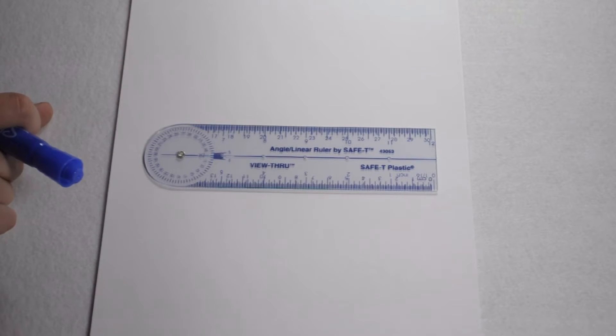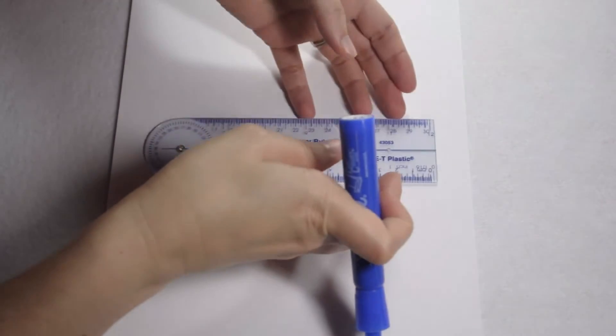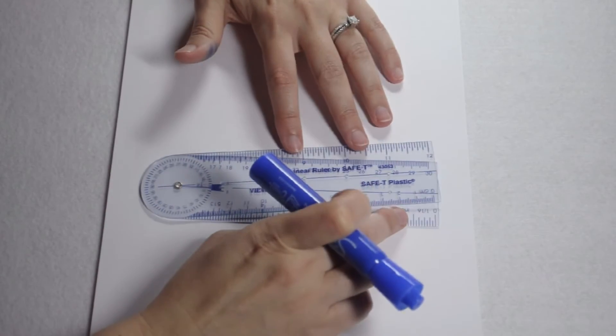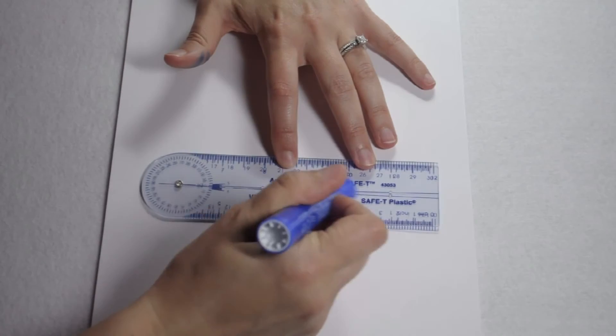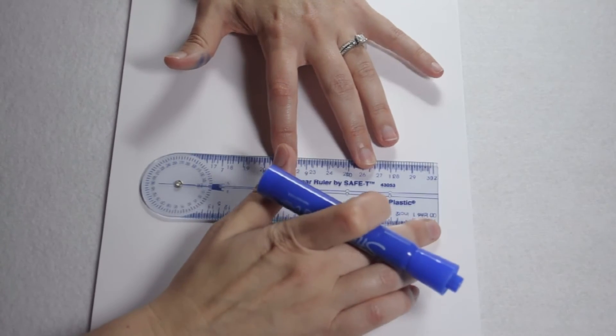Today we're going to look at using an angle ruler to create angles. We're going to start by drawing a 90 degree angle. In order to draw with an angle ruler, I need to first make sure that it's facing up so that I can read the words on it.